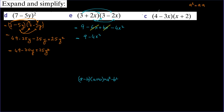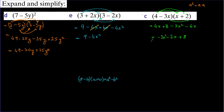For the last example, we multiply: 4 times x equals 4x; 4 times 2 equals plus 8; minus 3x times x equals minus 3x squared; and minus 3x times minus 2 equals plus 6x. Wait — that gives minus 6x. Combining only the like terms: 4x and minus 6x equals minus 2x. So the final answer is minus 3x squared minus 2x plus 8.